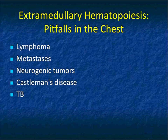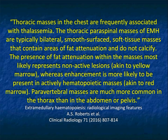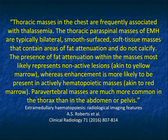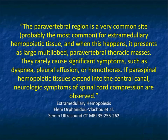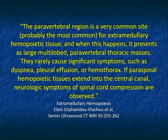In the chest, extramedullary hematopoiesis can simulate lymphoma, metastasis, neurogenic tumors, Castleman's disease, and even TB. Thoracic masses in the chest are frequently associated with thalassemia — typically bilateral, smooth-surfaced soft tissue masses that can contain areas of fat but do not calcify. Fat attenuation within the masses most likely represents non-active lesions, whereas enhancement is more likely present in active hematopoietic masses. The paravertebral areas are the most common sites, and paraspinal hematopoietic tissue can extend into the central canal, even causing cord compression.